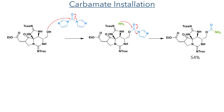With the C11 functionalisation complete, they then sought to install the pendant carbonate group. The compound was reacted with carbonyl diimidazole, which can be considered as an alternative to the more reactive but highly toxic phosgene. This is first attacked by the hydroxyl group, eliminating an imidazole. This is then reacted with ammonia, which eliminates a second imidazole group to provide the carbonate in a 54% yield.